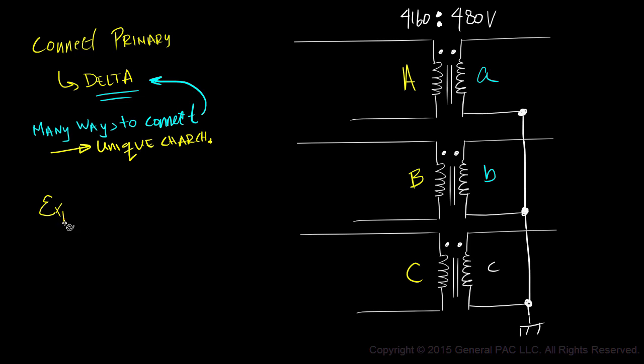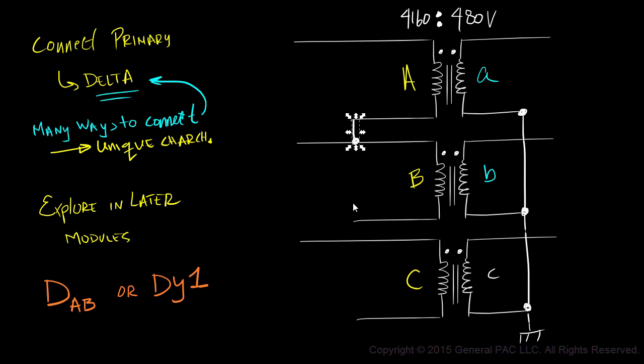We'll explore different delta transformer connections in later modules. But one of the most common delta connection is called a delta AB or DY1 connection. And we'll draw this delta connection like such.